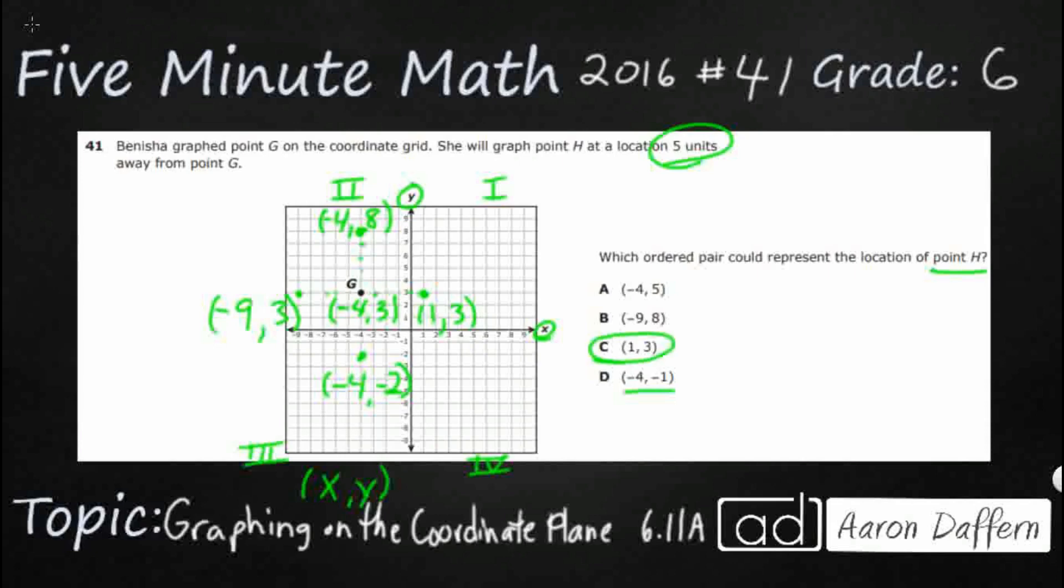And if we wanted to, we could have just taken this right here without even graphing it. We could have taken our negative 4, 3, and we could have just added 5, which is what we did. So that's negative 4, 8. That's what we got first. Or we could take our negative 4, 3, and we could have taken away 5, which would have been negative 4, negative 2, which is what we did here.